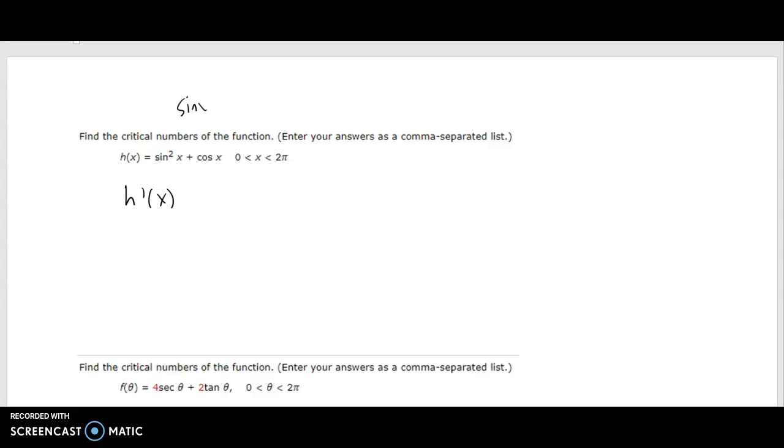Remember sine squared x means sine x squared. So the derivative of that would be 2, leave that alone, take 1 away, and then derivative of the input function.